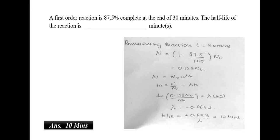A first order reaction is 87.5% complete at the end of 30 minutes. The half-life of the reaction is. So, first we have to find what the lambda is to determine the half-life. So, we would use the formula n is equal to n0 e to the power minus lambda t. From there when we find out the lambda, we would find out t half. t half is nothing but 0.693 by lambda. So, here the t half would be about 10 minutes.